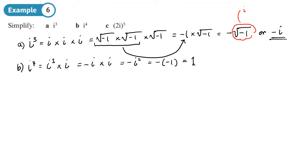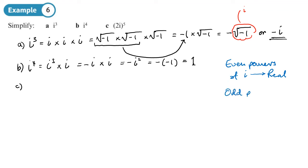This happened when we were expanding brackets with i squareds too. In general, even powers of i give something which is real — i² = −1 and i⁴ = 1 — while odd powers of i give something which is imaginary. I would need to check whether the same rules apply for negative powers, such as i to the −2 or i to the −4, and maybe cover that in another video.